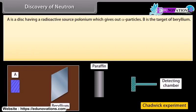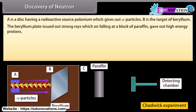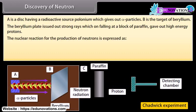Discovery of neutron: A is a disk having a radioactive source polonium, which gives out alpha particles. B is the target of beryllium. Both A and B are placed in an evacuated chamber C. The beryllium plate issued out strong rays which, on falling at a block of paraffin, gave out high energy protons. The nuclear reaction for the production of neutrons is expressed as a result of this setup.